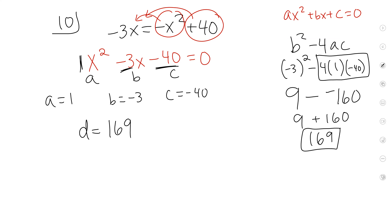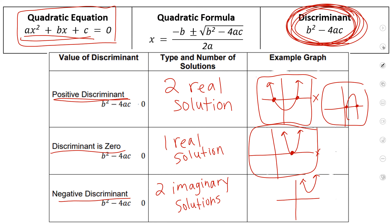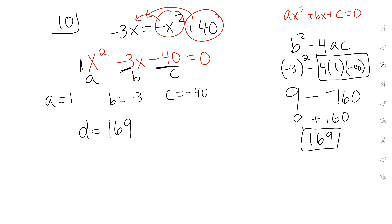So let's go back to our notes. If I have a positive discriminant, such as 169, that means I have two real solutions. Our discriminant was a positive number, so that means I have two real solutions.